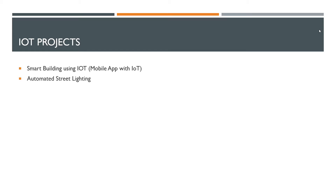Automated street light — there is a street light that can be automated. With IoT, it works machine to machine using only a sensor with the light.